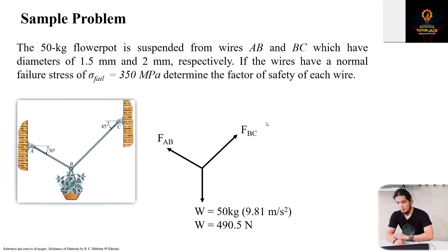Recall that the equation for factor of safety is just the ratio of stress fail divided by stress allowable. We're given the stress fail which is 350 megapascals for each wire.